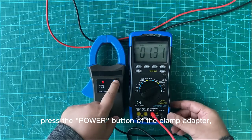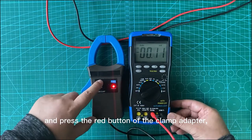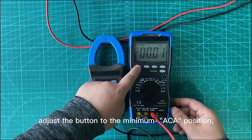Press the power button of the clamp adapter and press the red button of the clamp adapter. Adjust the button to the minimum active position.